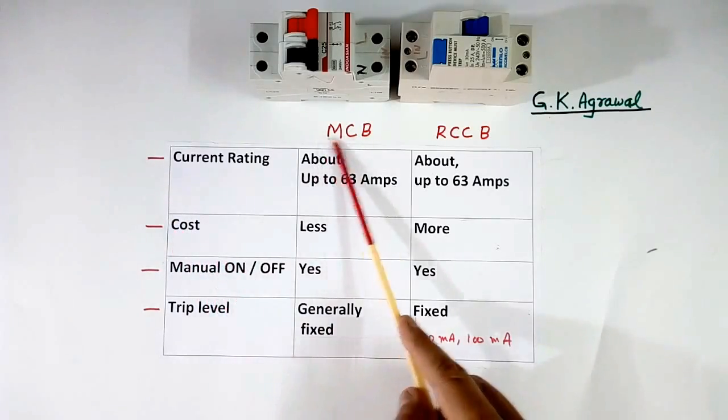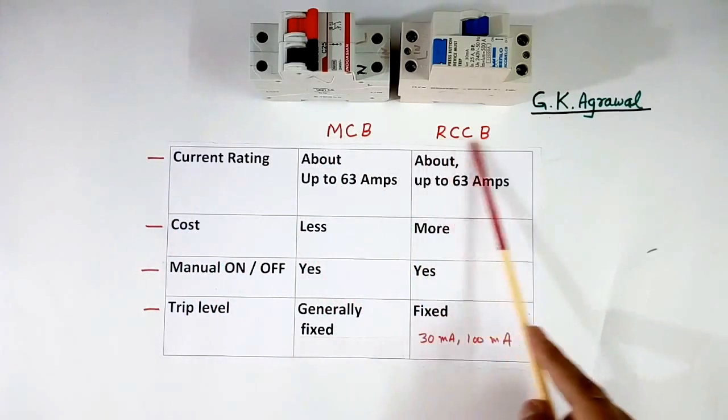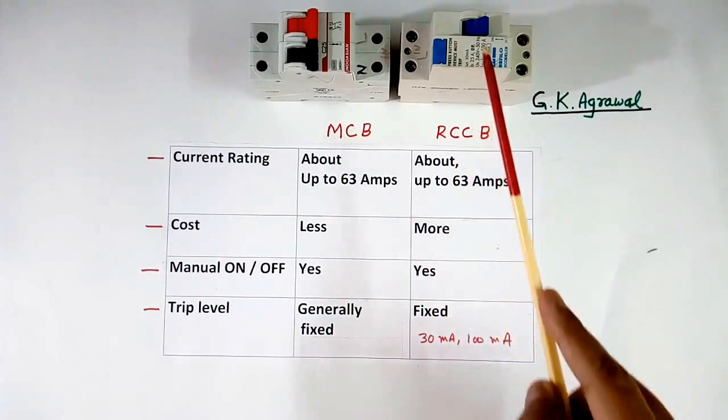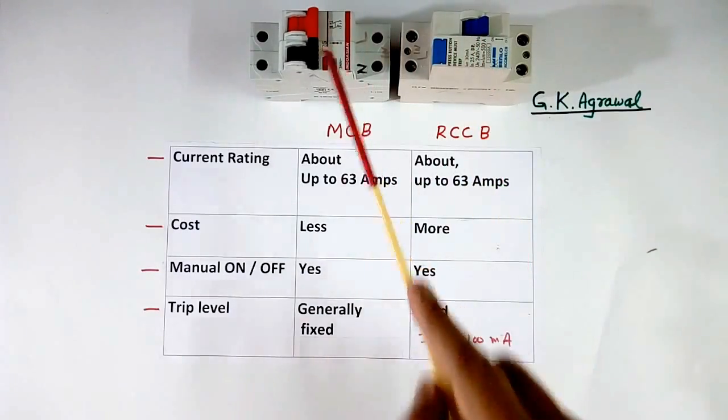Cost: MCB cost is less. RCCB cost is more. This RCCB is 4 times costlier than this.